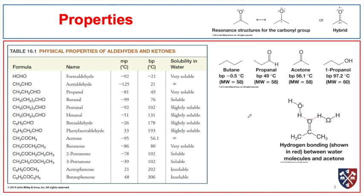The properties of aldehydes and ketones are dominated by the polar nature of the carbonyl group. Small aldehydes and ketones tend to be very polar and quite soluble in water. The one-, two-, and three-carbon aldehydes are very soluble in water, as are acetone and butanone — in fact, acetone and water are miscible in all proportions, as are acetaldehyde and water. Looking at boiling points, propanal and acetone have roughly the same molecular weight as butane at 58, but butane has a much lower boiling point. Propanal and acetone boil at 49°C and 56°C respectively, due to strong intermolecular dipole-dipole attractions.